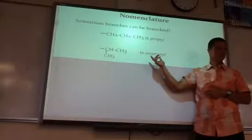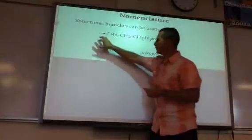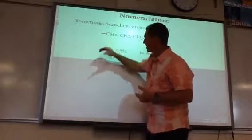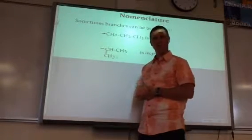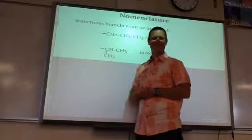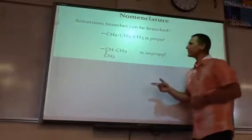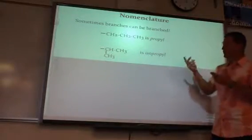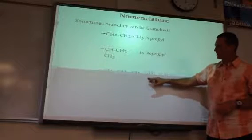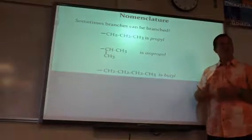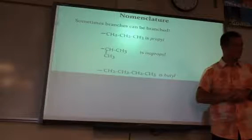Isopropyl would be like a branched branch, where this is the parent, you got this coming off, and then something branching off of the branch. There are only two propyls, but when we get to the next number of carbons, which is four, there are four different types of butyl branch.